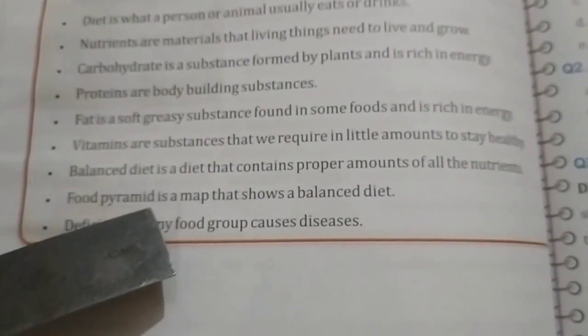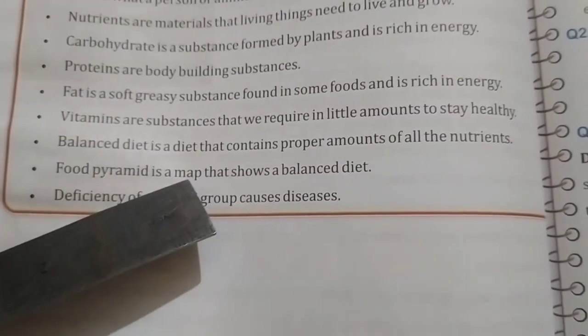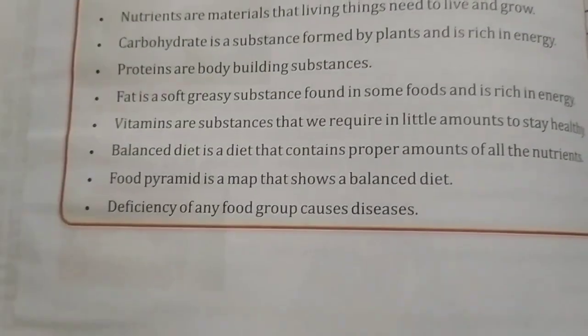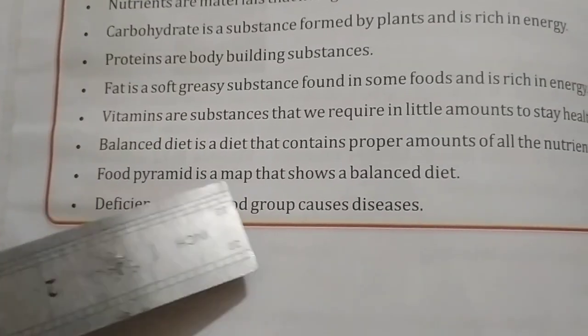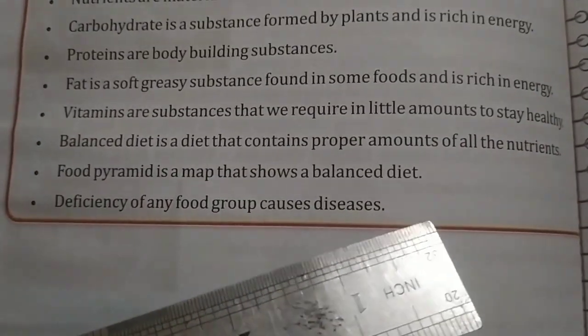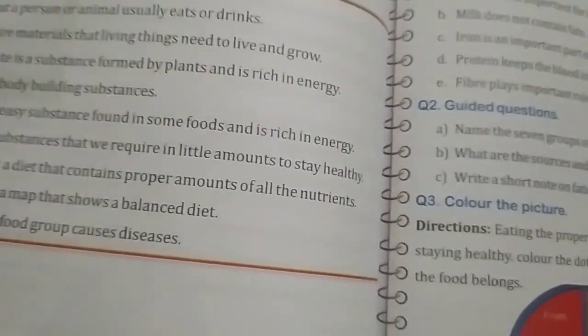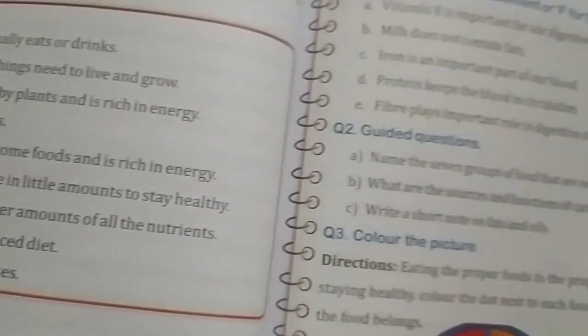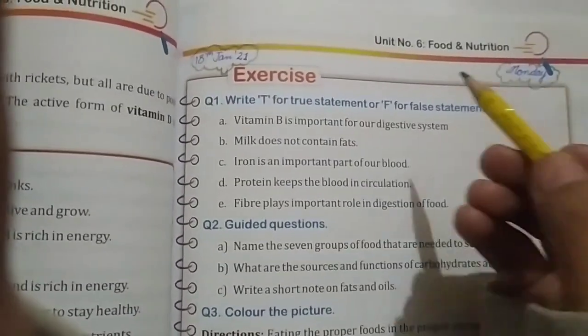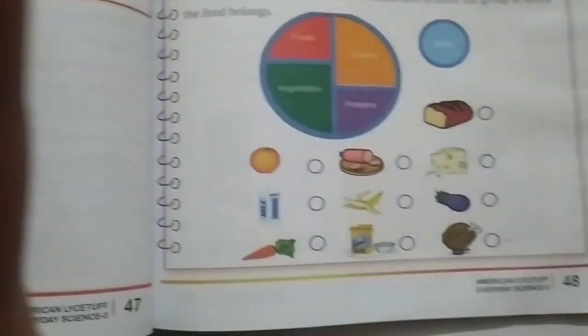A balanced diet is a diet that contains proper amounts of all nutrients — you have to learn this from page number 47. A food pyramid is a map that shows a balanced diet. You have also made a 3D food pyramid model and a healthy plate last week. Deficiency of any food group causes the diseases we have studied in this lecture.